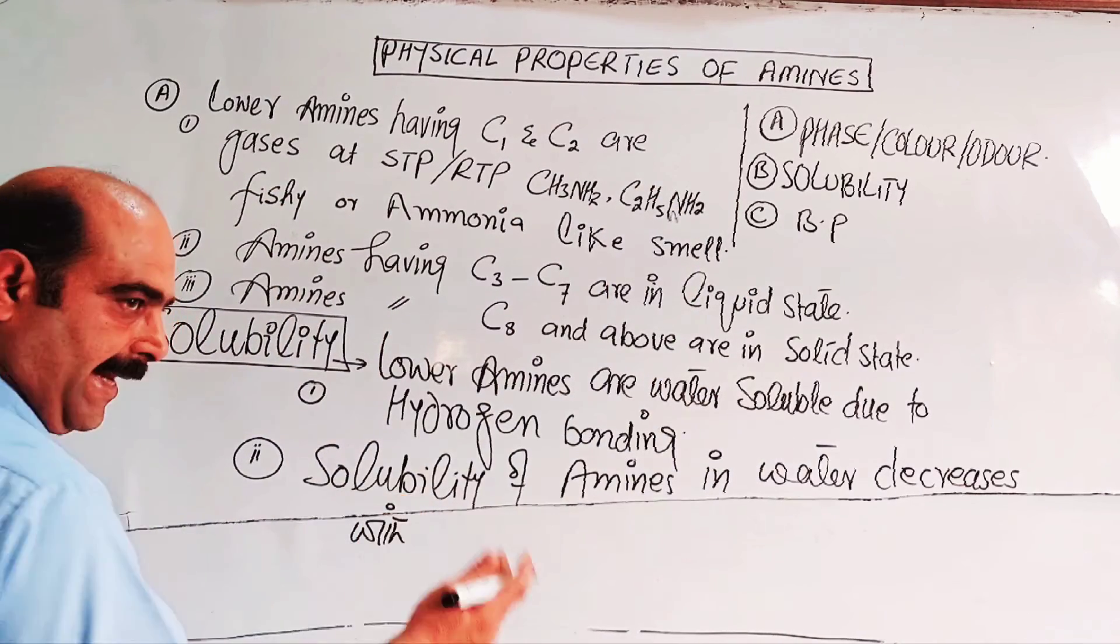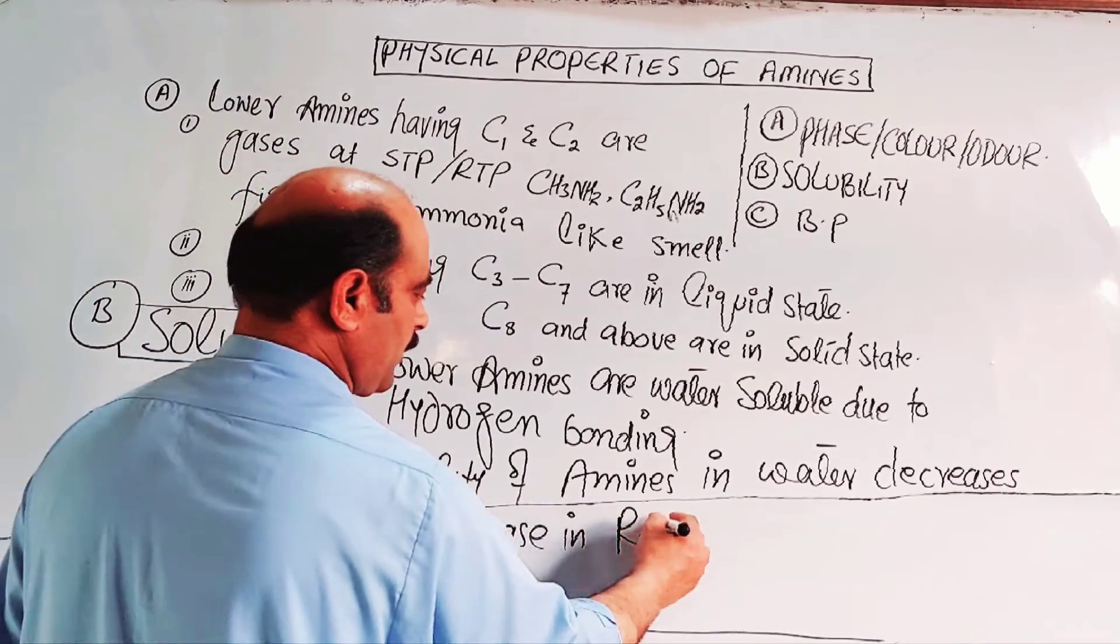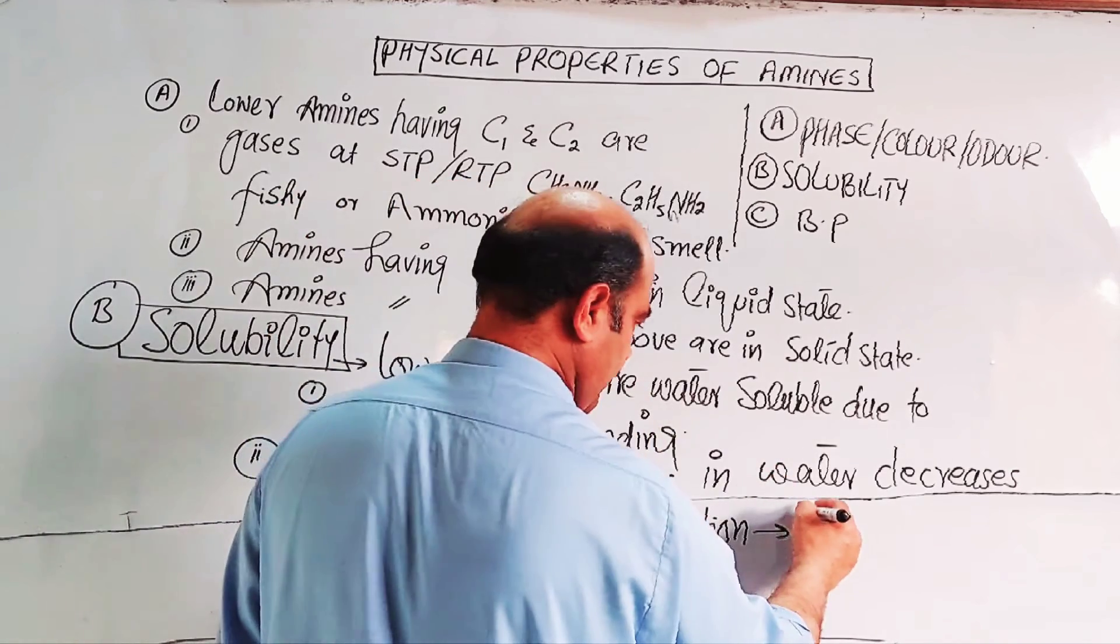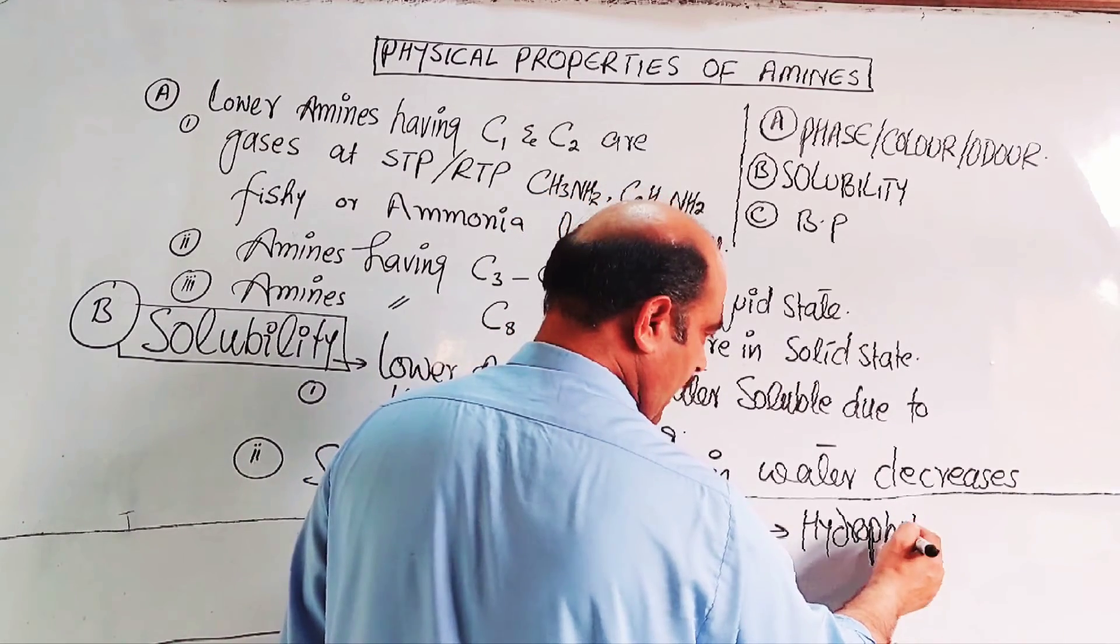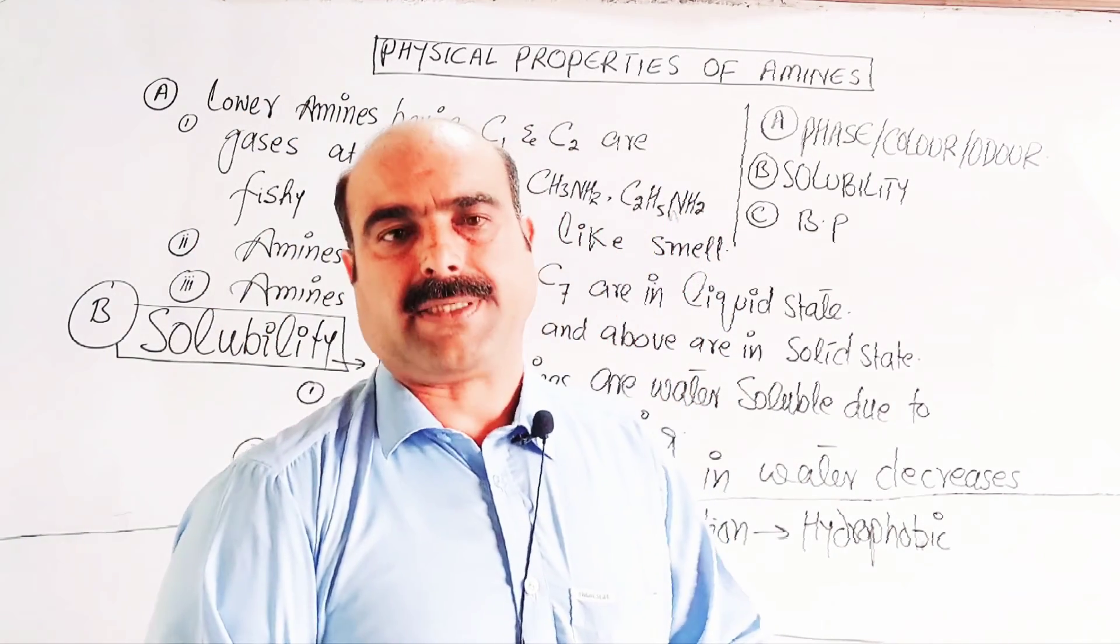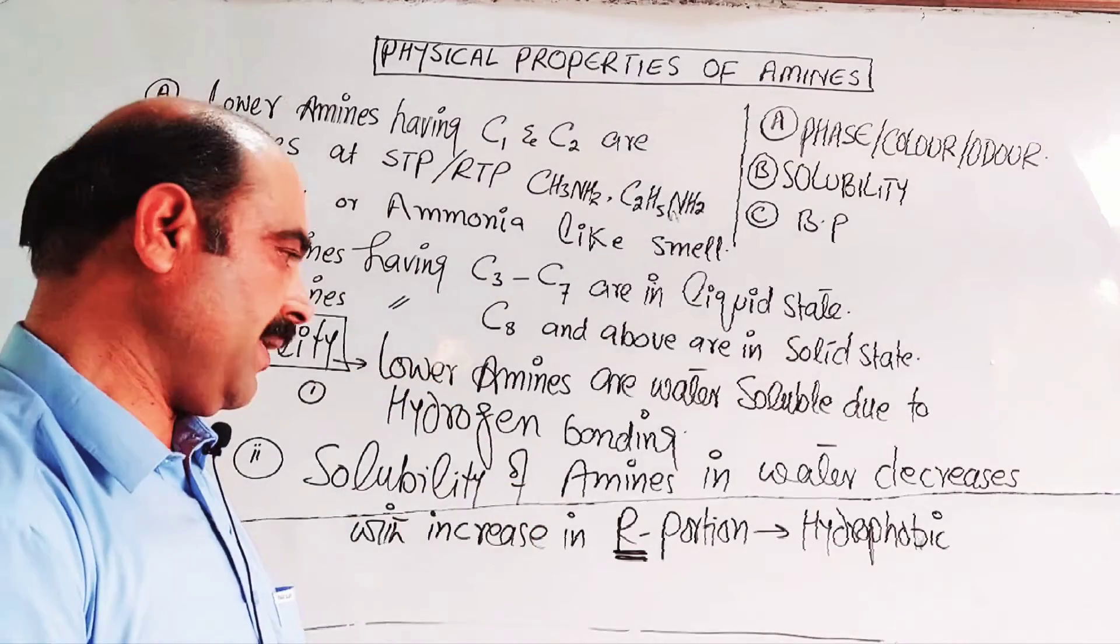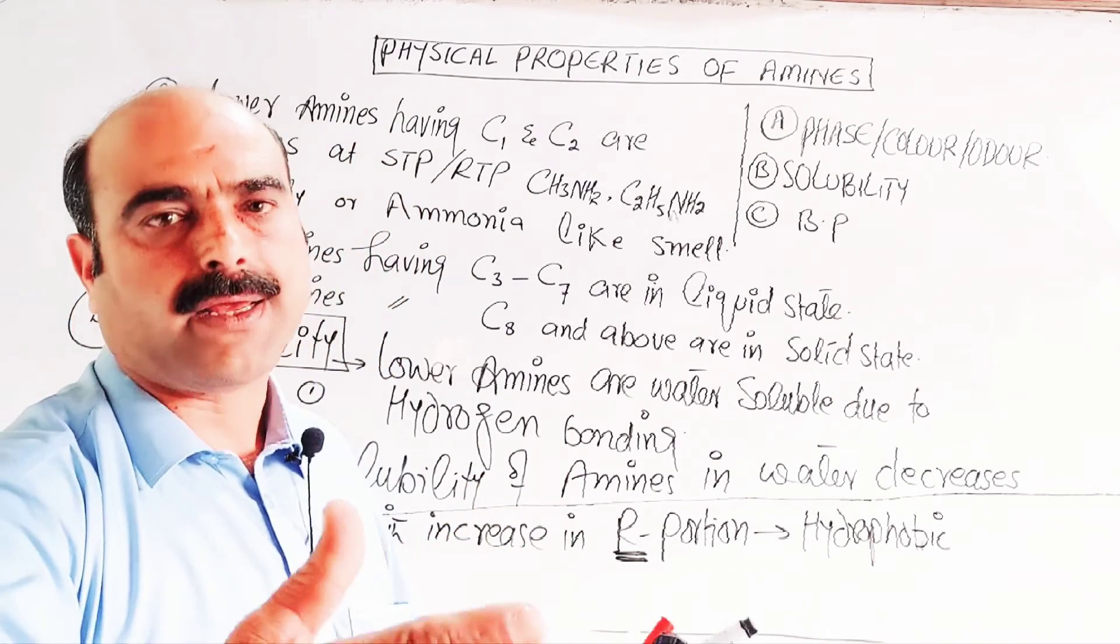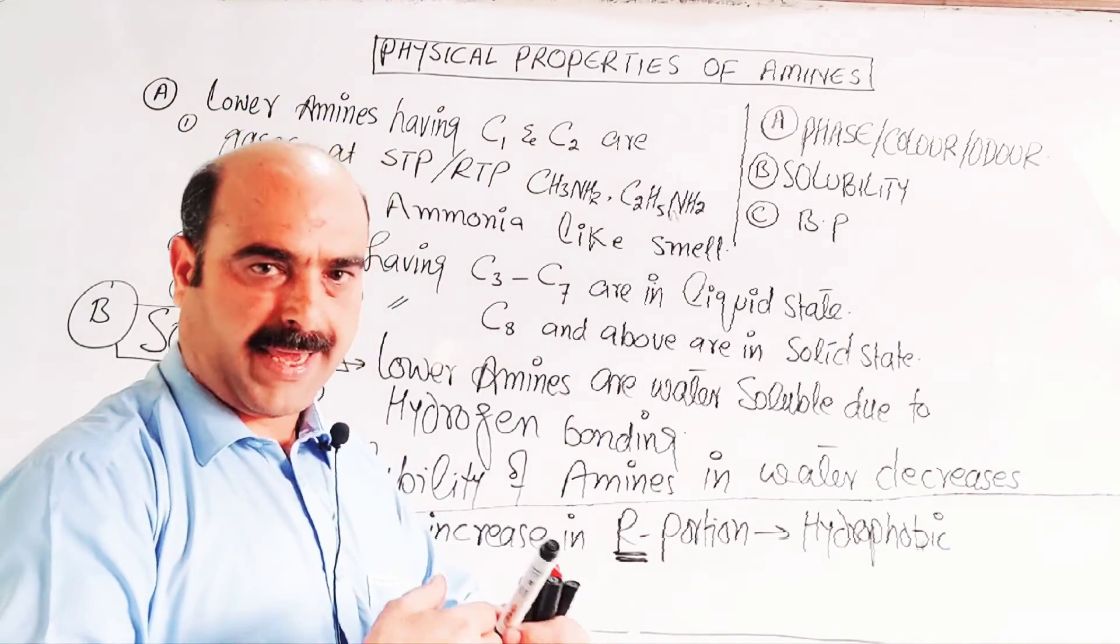Because alkyl portion is hydrophobic. Hydrophobic means water repeller. The alkyl portion is non-polar, it's an organic portion, while water is inorganic and polar. As the carbon increases from 2, 3, 4, 5, 6, 7, 8, the alkyl portion repels water, solubility decreases, and they form separate layers.